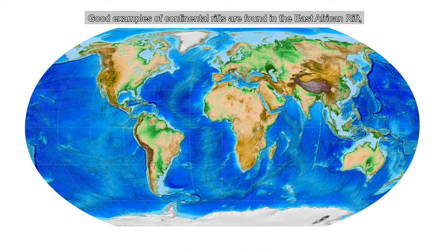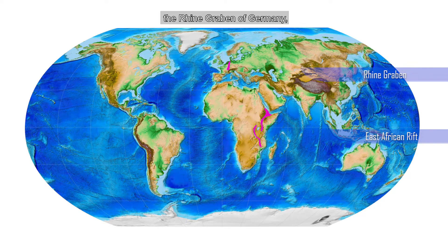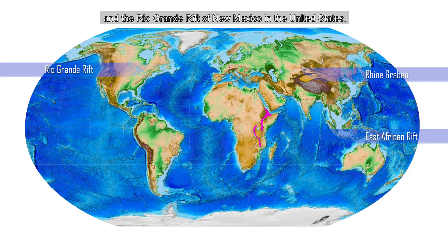Good examples of continental rifts are found in the East African Rift, the Rheingrauben of Germany, and the Rio Grande Rift of New Mexico in the United States.